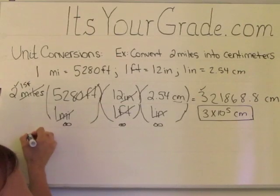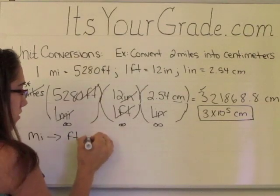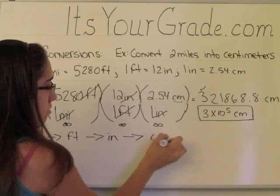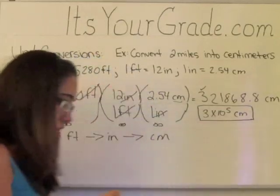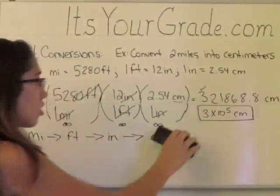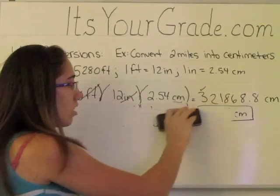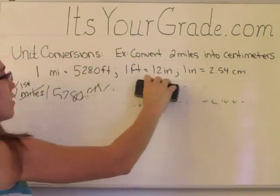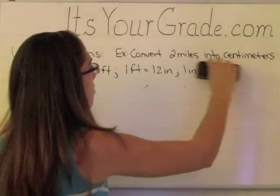So what we did was we converted miles into feet. We then converted feet into inches, and then inches into centimeters using conversion factors. So that's normal unit conversion factors. But what happens if your units are cubed or squared? Well, basically we're going to do the same thing, except that the unit conversion factors are now raised to a power.